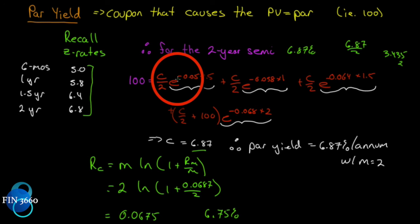You might wonder: why does this matter? Here's when you'd use it — when we have interest rate risk and need to eliminate or protect ourselves from it. It's important to know what gets us to par so we can construct a derivative contract or forward rate agreement to reach that point. That's all.